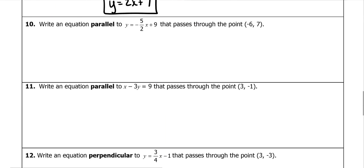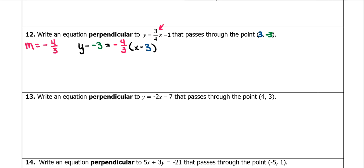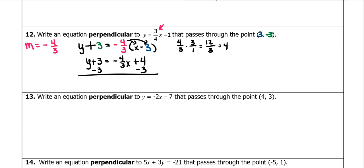Now let's find a perpendicular equation. For perpendicular lines we use the opposite reciprocal of the slope. The original slope is positive 3/4, so our new slope is negative 4/3. Using our given point, plug into the equation: Y minus negative 3 becomes Y plus 3. Distribute: negative 4/3 X, and negative times negative gives positive — 4/3 times 3 is 12/3 which equals 4. Subtract 3 from both sides: Y equals negative 4/3 X plus 1.